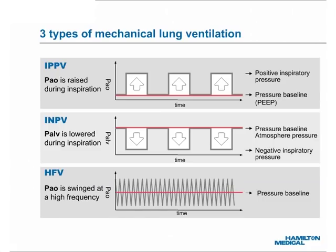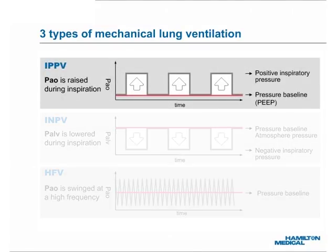Artificial lung ventilation, or mechanical ventilation, can be performed using one of three working principles. The top graph shows the pressure waveform of IPPV, or Intermittent Positive Pressure Ventilation. Using this principle, a positive airway opening pressure, or PAO, is applied intermittently above the pressure baseline, shown here in red. The positive PAO pushes the inspiratory gas into the lungs. The baseline pressure is called Positive End Expiratory Pressure, or PEEP, and is usually higher than the local atmospheric pressure.